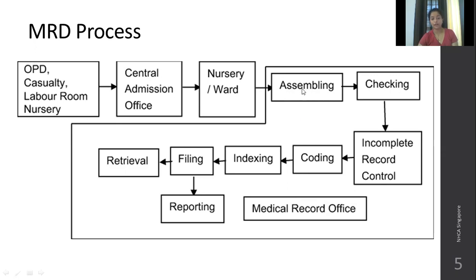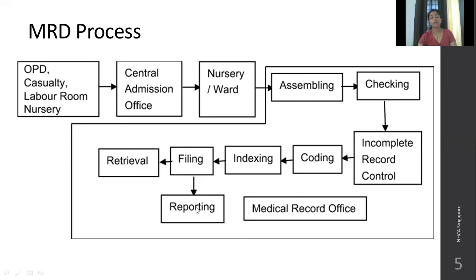A certain order is followed in the hospital, and assembly ensures that the same standard order is followed everywhere. Checking verifies the completeness of the record; if incomplete, it is sent back to the ward. If complete, it is sent for coding based on the International Classification of Diseases. Indexing is then done — either alphabetically or according to department, as per the hospital's protocol — followed by filing. Records are put back in the shelves and retrieved as and when required. Reporting is done under the notification and notifiable diseases act.